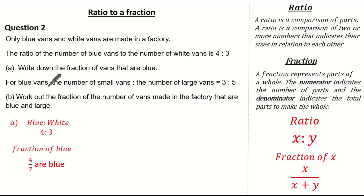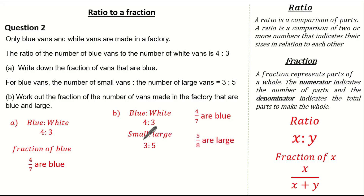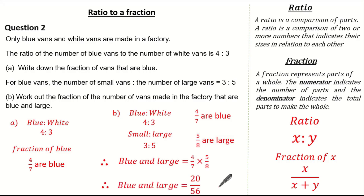Part B states that for blue vans, the ratio of small vans to large vans is three to five. We are asked to find the fraction of all vans made in the factory that are blue and large. We know the ratio of blue to white is four to three, and small to large is three to five. The fraction that are blue is four over seven, and the fraction that are large is five over eight. Therefore the fraction of blue and large vans is four over seven multiplied by five over eight, giving 20 over 56.